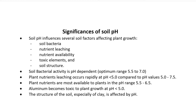Soil bacterial activity is greatly affected by pH because bacteria operate best in the pH range of 5.5 to 7. Plant nutrients leach out of soils at a pH below 5 much more rapidly than from soils with values between 5 and 7.5. Plant nutrients are generally most available to plants in the pH range of 5.5 to 6.5.